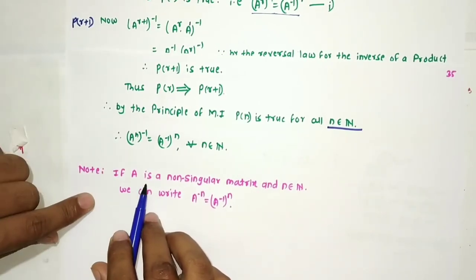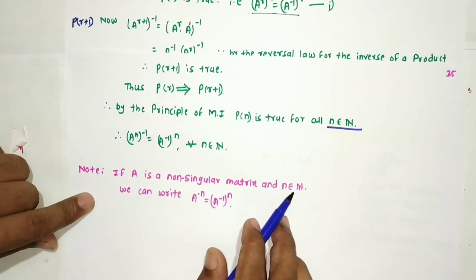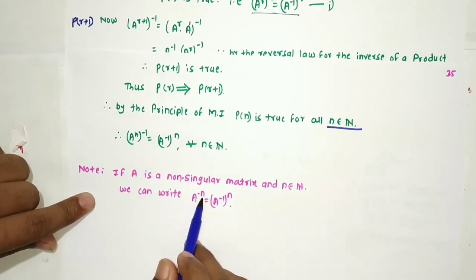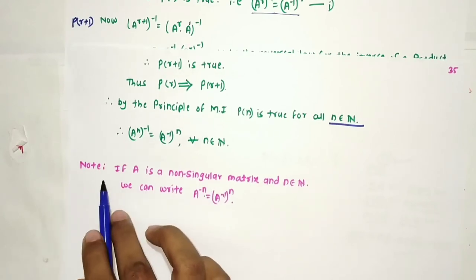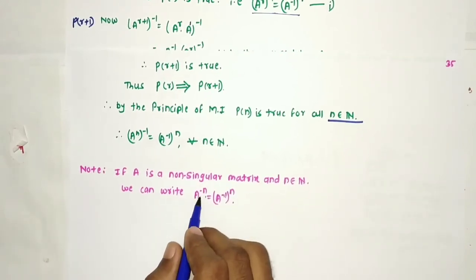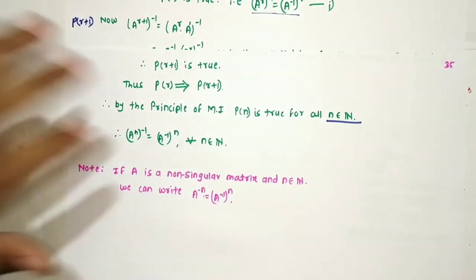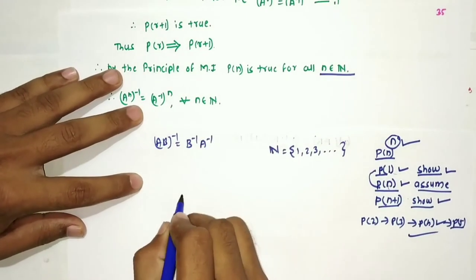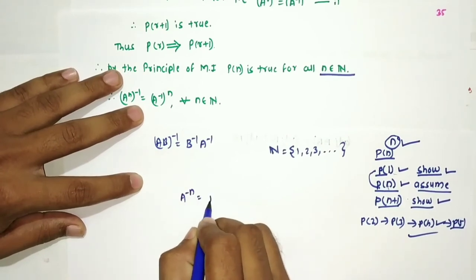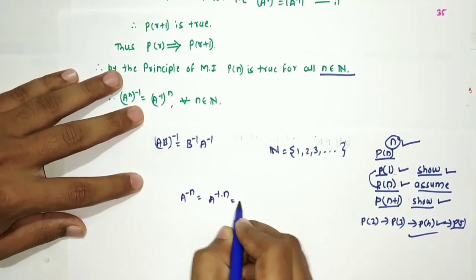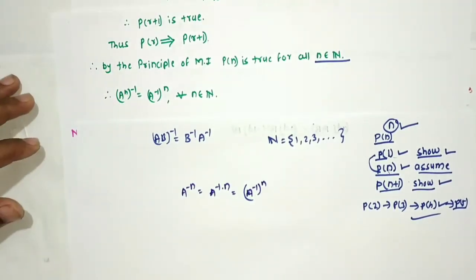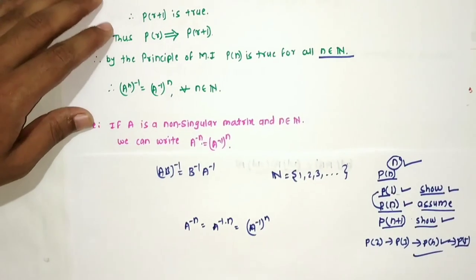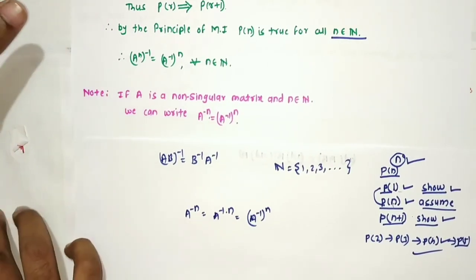Corollary: If A is a non-singular matrix and n belongs to natural numbers, we can write A raised to minus n equals (A⁻¹)ⁿ, since A^(−n) = (A^(−1))ⁿ. This concludes the rest of the lecture. Thank you.